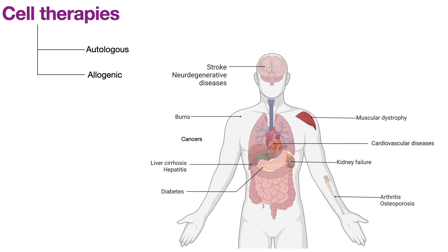Stem cells are promising for various cell therapies and can theoretically be applied for diseases ranging from stroke to cardiovascular disease, diabetes, and cancers. These therapies can be autologous, meaning cells from a patient are taken, modified, and put back into the same patient. For example, CAR-T cell therapy for cancers involves isolating T cells from a patient, making them express a tumor-specific receptor, and injecting the modified T cells back into the patient so they can actively target cancer cells that previously escaped immune attack.